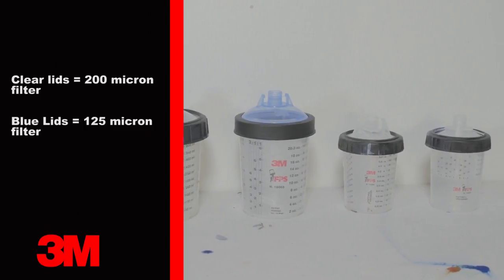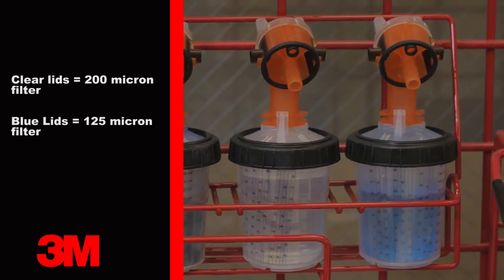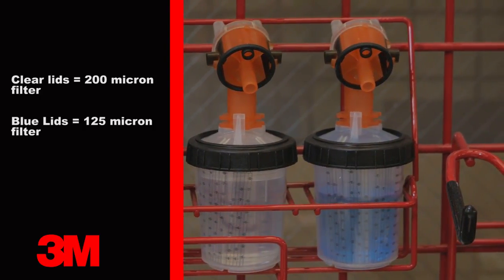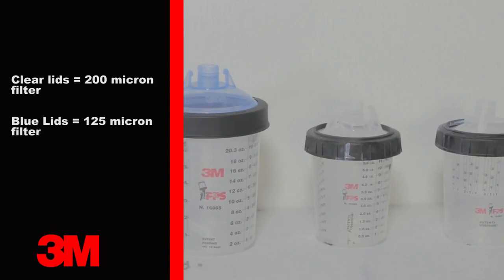Clear PPS lids contain a 200 micron size strainer, which is typically used for solvent-borne paints. Blue lids use a 125 micron filter, which is typically used for waterborne paints.